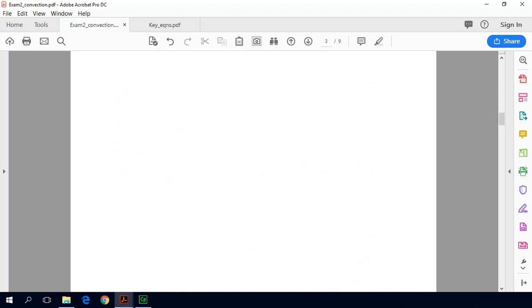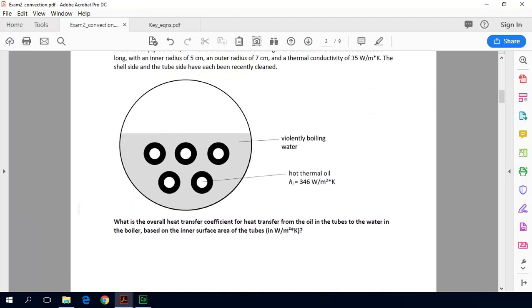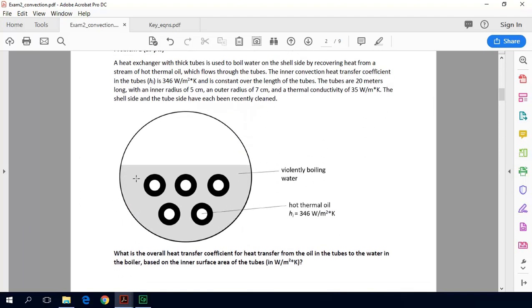So I'm going to scroll back up and we'll see what problem one looks like. Really we just need some of the thermal properties and the geometry from this heat exchanger. So we had boiling water here in this side. It's basically a steam drum, but it's also a heat exchanger that boils this water. So we have a hot thermal oil that travels through here. The heat comes from this thermal oil.